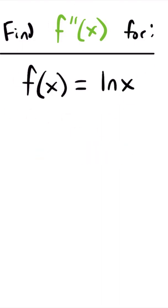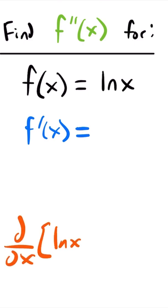Well, in order to find the second derivative, we first need to find the first derivative. The first derivative, f prime of x, will be equal to the derivative of the natural log of x. And we know from one of our derivative rules that the derivative of the natural log of x is equal to 1 divided by x.